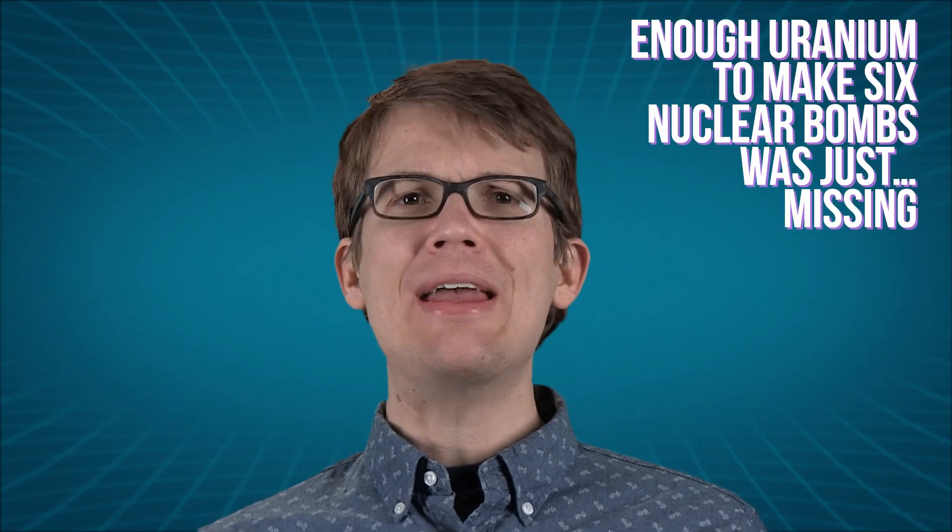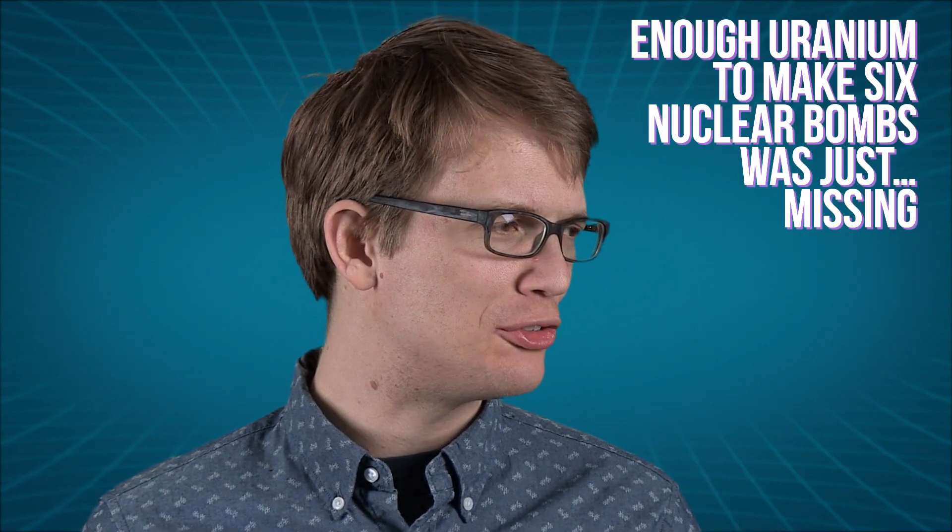They had a lot less usable uranium than they thought they did. Enough uranium to make six nuclear bombs was just missing. Normally, the uranium found in ore comes in three different varieties, or isotopes, each with a different number of neutrons in its nuclei.